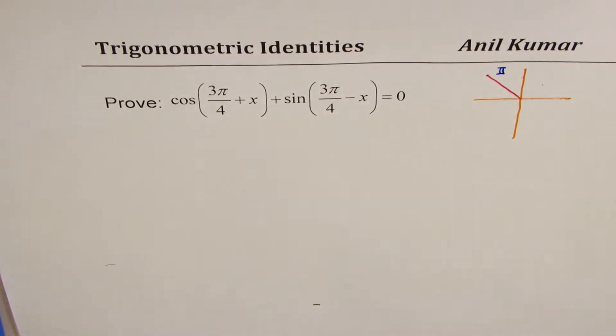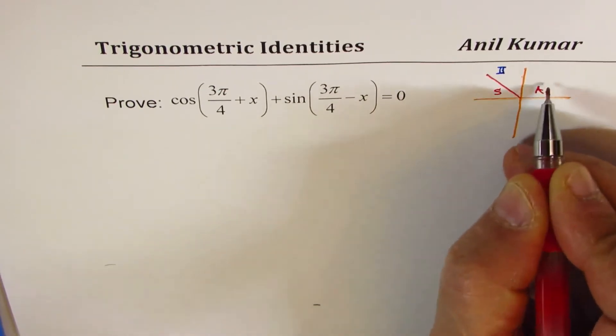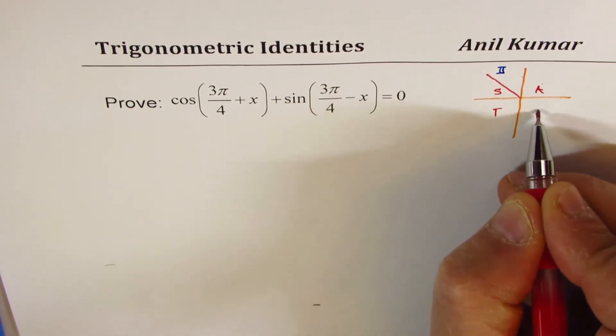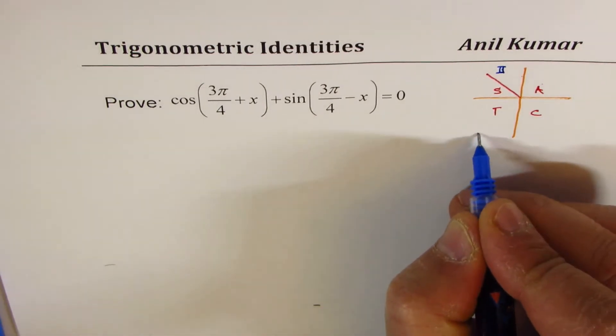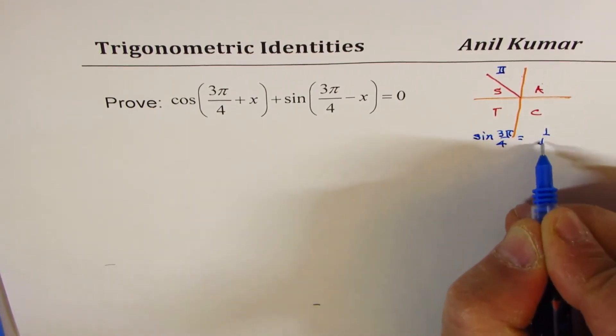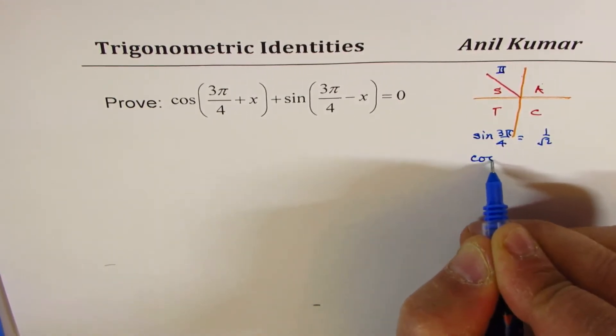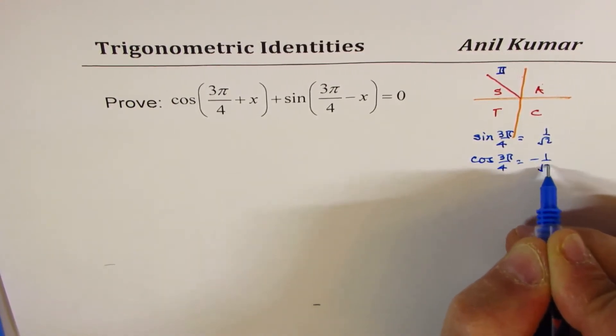Now, in quadrant 2, as you know, sin is positive. All are positive in 1, sin in 2, tan in 3, cos in 4. So the value of sin(3π/4) is equal to 1 over square root 2. However, cos(3π/4) will be equal to minus 1 over square root 2.